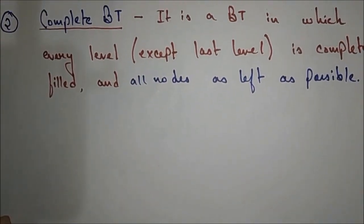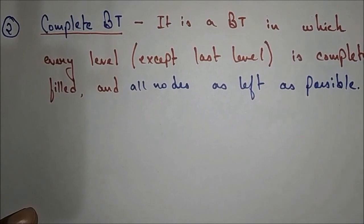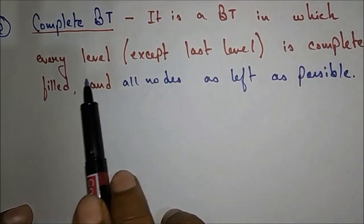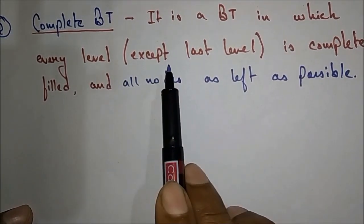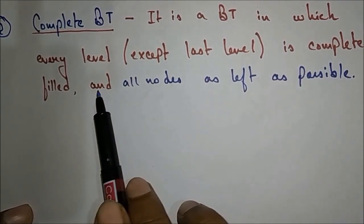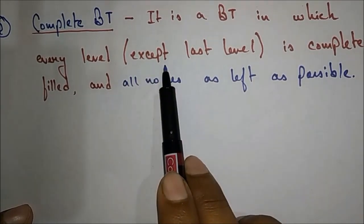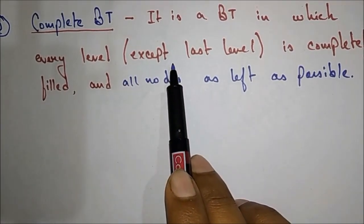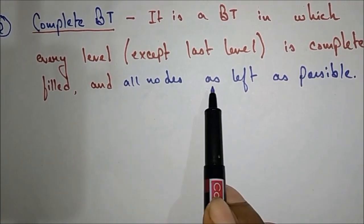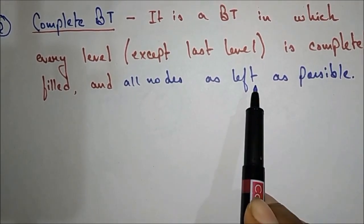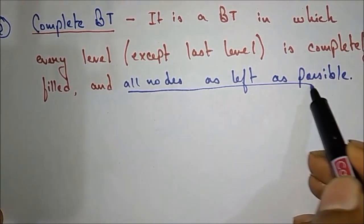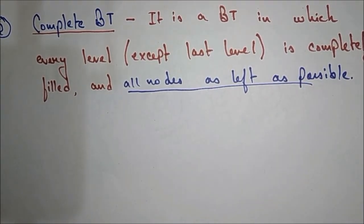Now we'll see the next type: the complete binary tree. It is a binary tree in which every level except the last level is completely filled, and all nodes are as left as possible.